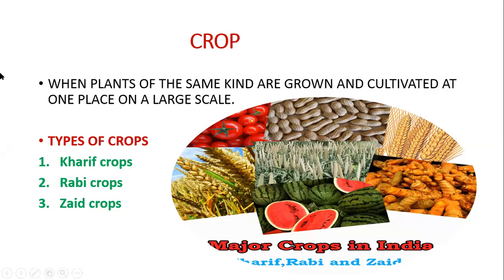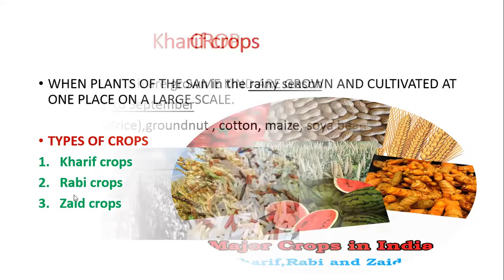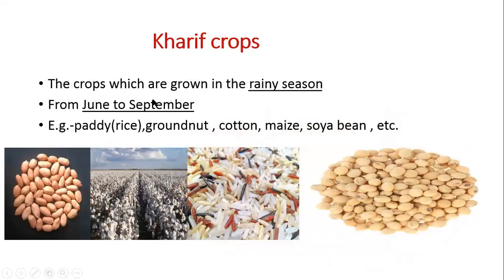There are three types of crops: Kharif crops, Rabi crops, and Zaid crops. Kharif crops are the crops which are grown in the rainy season, from the month of June to September.